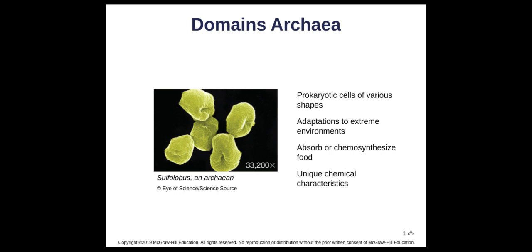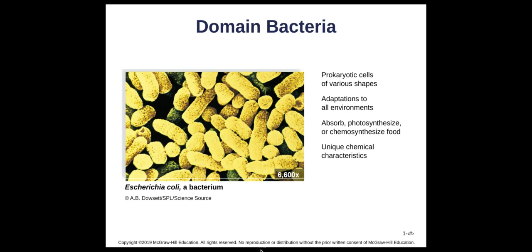Domain Bacteria consists of prokaryotic cells of all kinds of shapes — rod shapes, circle shapes, spiral shapes — that can live really all over the place: soil, internally, air, plants. They can absorb nutrients, do photosynthesis, or use chemicals to get their food. They have unique chemical characteristics that make them separate from Archaea. You're probably familiar with bacteria — strep throat, staph infection, sinus infections are caused by bacteria.